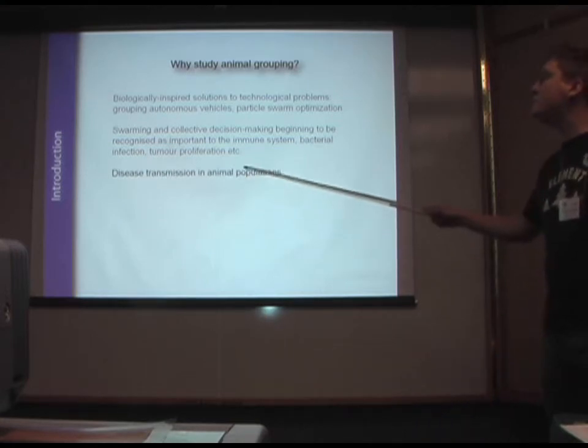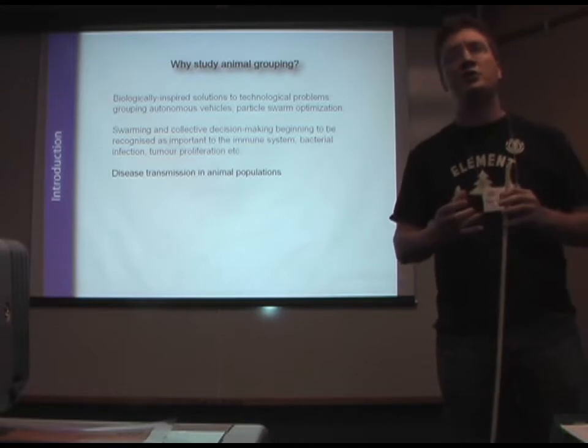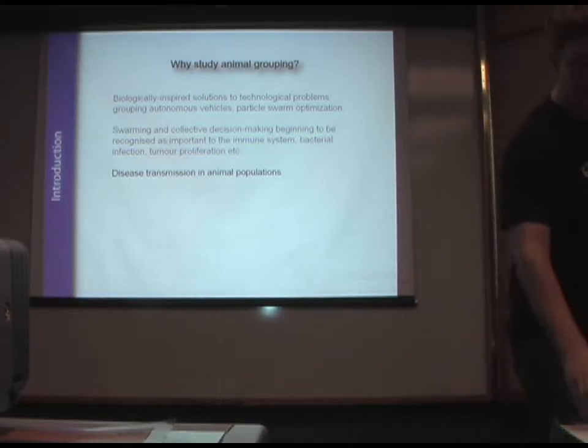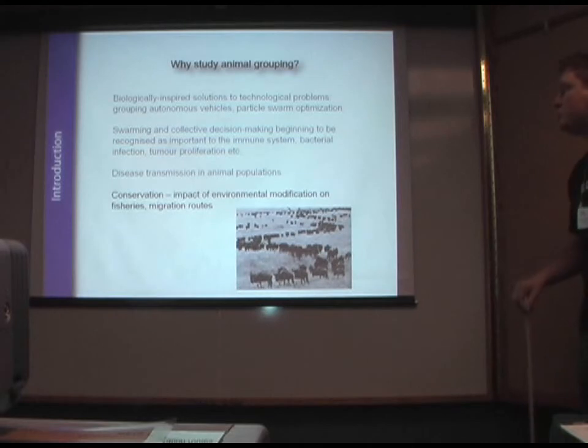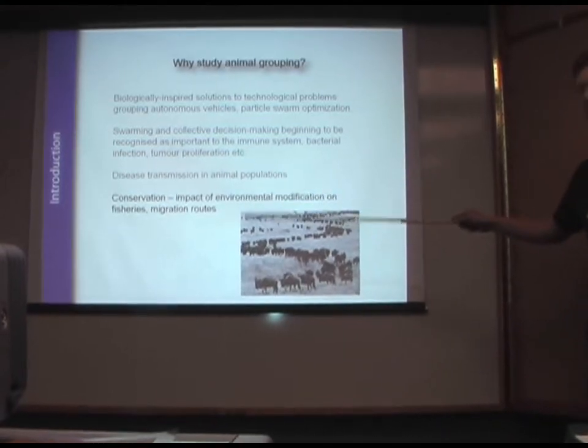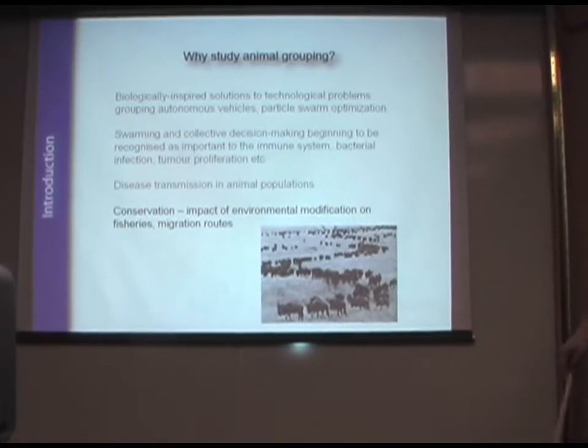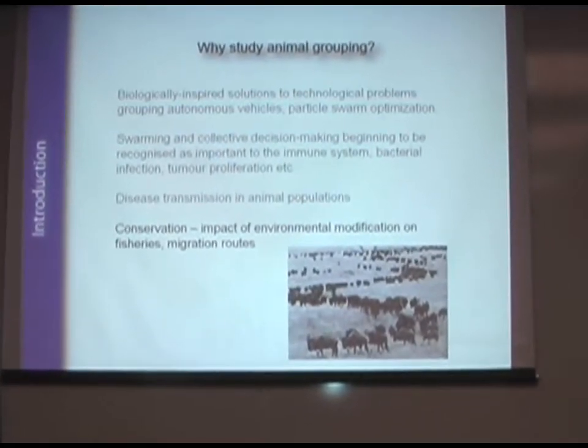Also, if we want to understand disease transmission in animal populations, we need to understand how animals interact with each other and how they interact with the external environment. And this is increasingly important to conservation issues, where the impact of human-generated environmental modification is having big impacts on migration patterns of ungulates, fish, and so on.